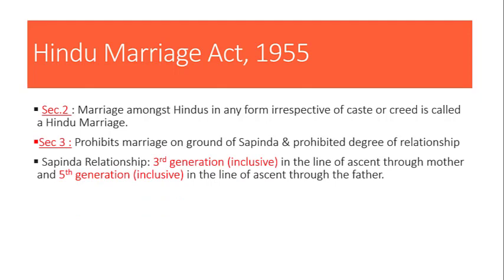Sapinda relationship kya hai? It is the third generation inclusive in the line of ascent through mother, and the fifth generation inclusive in the line of ascent through the father. Ascent yaani ki oopar ki side jaana — father, father's father, and so on. Mother ke side se three generations jo ascent ki side badh rahi hain — mother ke father, mother ke father ke father, mother ke father ke father ke father — ye three generations ke beech mein jo marriage hai, woh prohibited hai under the sapinda relationship.